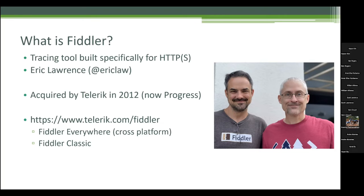There are two different products now. Fiddler Everywhere is the new cross-platform version from Progress — they basically scrapped and started over and wrote it for Windows, Mac, or Linux. That is a subscription. Fiddler Classic is what I've used forever; it's Windows-only and I'm going to use it primarily for this talk because there are still some advanced techniques I'm going to show today that are not in Fiddler Everywhere yet. At the very end, I'll show what Fiddler Everywhere looks like.